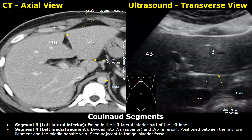Posterior to the ligamentum venosum is the caudate lobe — this is caudate lobe, segment 1. This is the same level at which the ultrasound image is taken. In this region you can see the ligamentum venosum in both images, with the caudate lobe posterior to this ligament. The IVC is also present at this point — so the caudate lobe is between the ligamentum venosum and IVC, and anterior to the ligamentum venosum is segment 3.